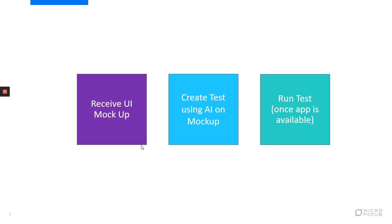If you were able to execute the test based on the mock-up you received, and all the steps you defined in the test were performed correctly, that confirms the workflow. We will have the mock-ups in ALM Octane as image files. I'll give you a short overview of how this looks, and then we'll go into the actual identification and try to build our test.